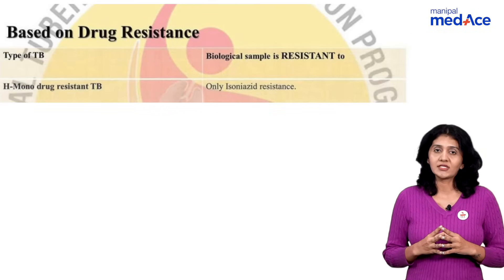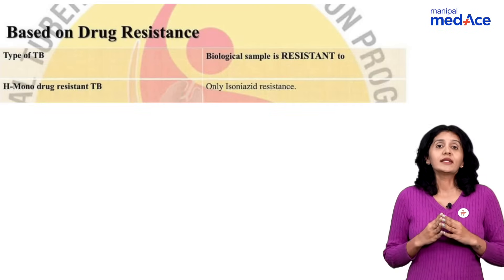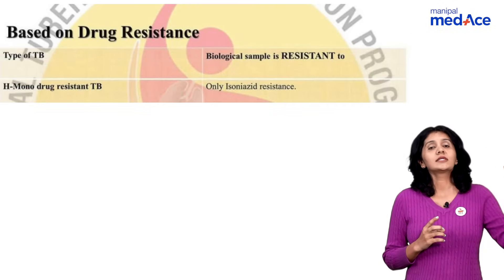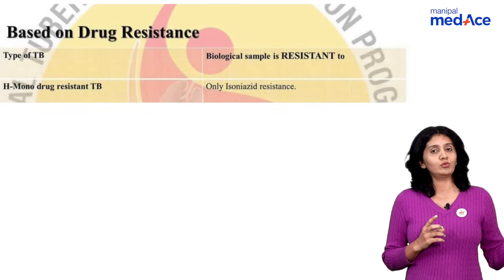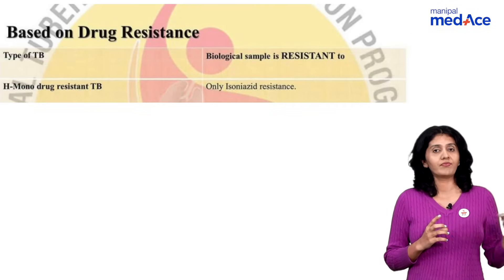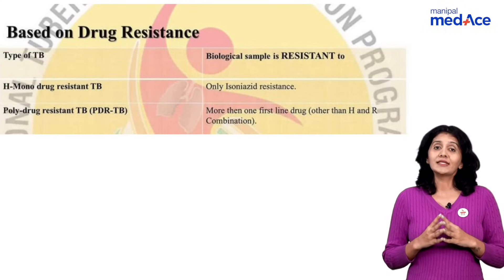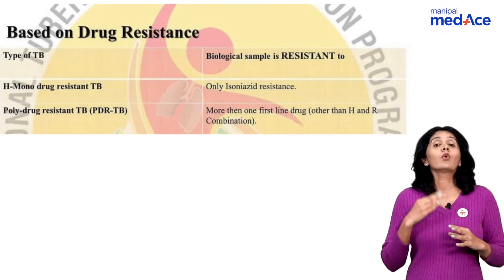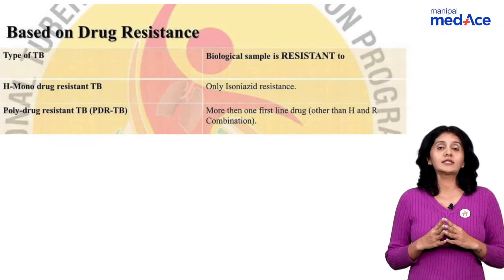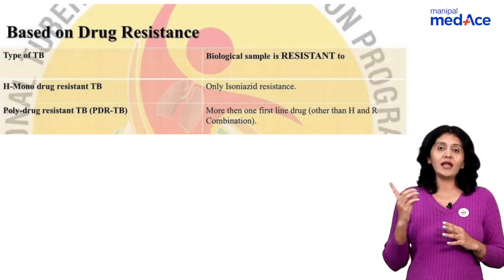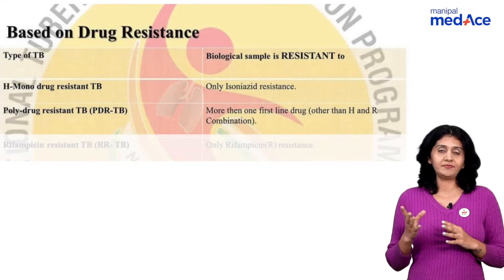What is monoresistance? Resistance to only one of the first line anti-tubercular drugs. What is polyresistance? Resistance to more than one first line anti-tubercular drugs, but other than isoniazid and rifampicin.